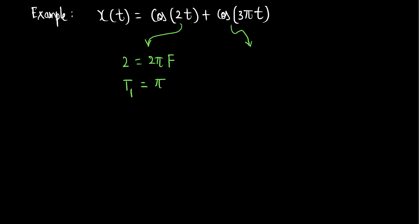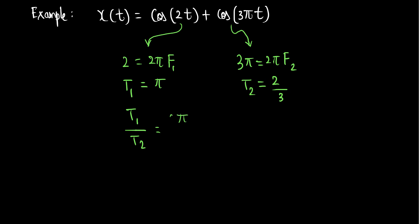For the second component, 3π = 2πf2, so T2 = 2/3. If we calculate the ratio T1/T2, that turns out to be π divided by (3π/2), which simplifies to an irrational number. Therefore, this resultant signal is not periodic, since T1/T2 is an irrational number.